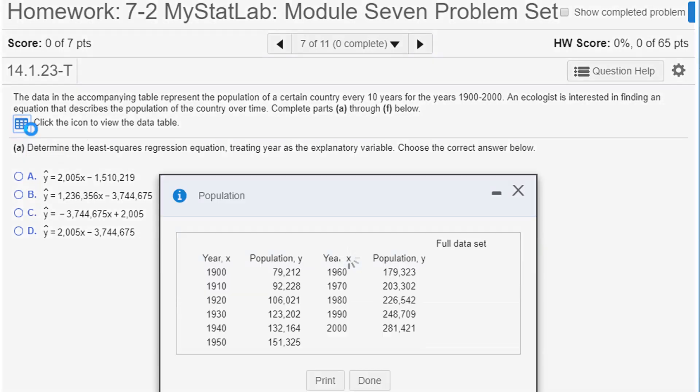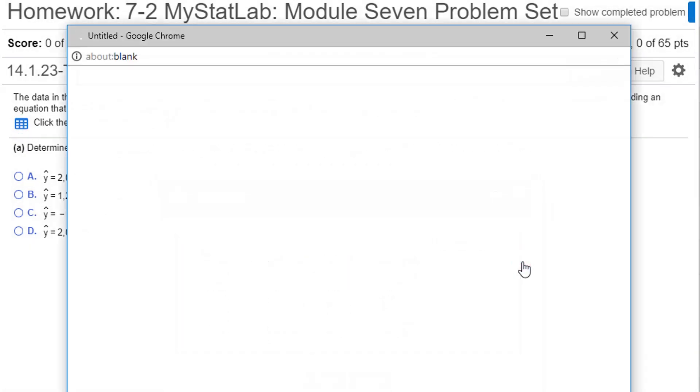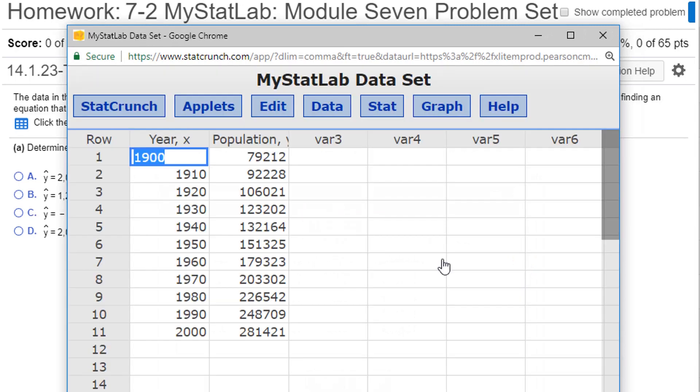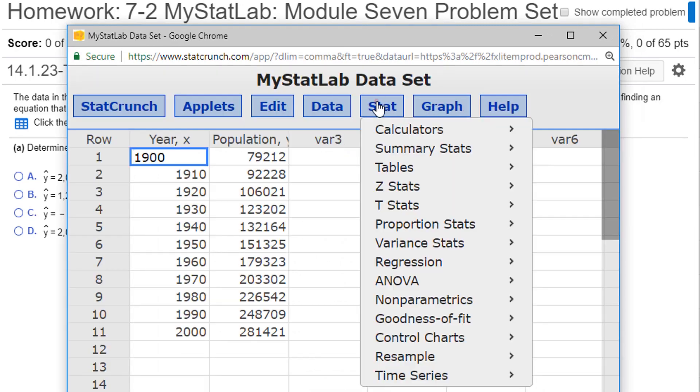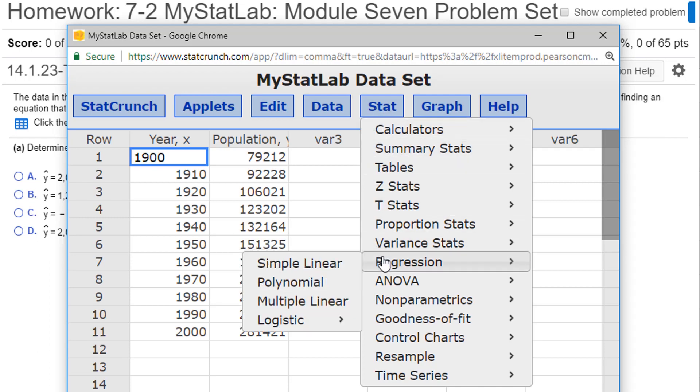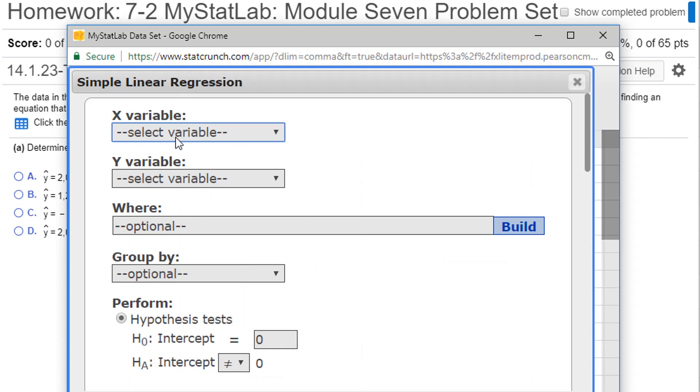So let's open the data. Let's now bring it into StatCrunch and perform a linear regression. Stat, we're going to go down to regression. Because we have one x variable and one y variable, that's simple linear regression. The x variable is labeled as x already here, the y variable is y, and that's all I'm going to set. Everything else I'm going to leave as standard options and just click compute.